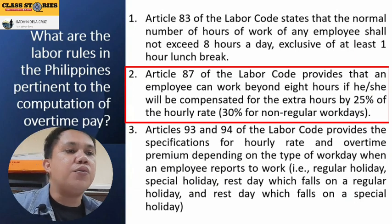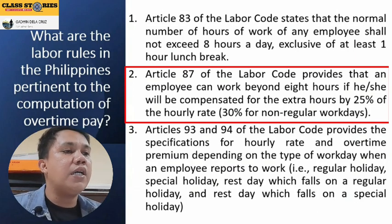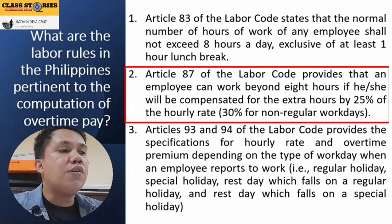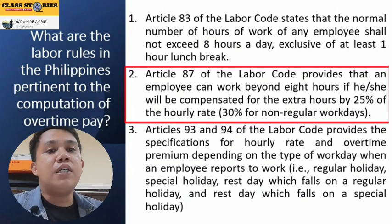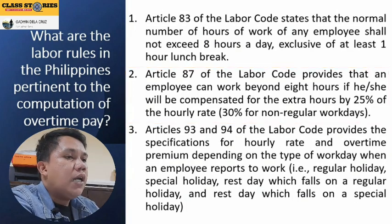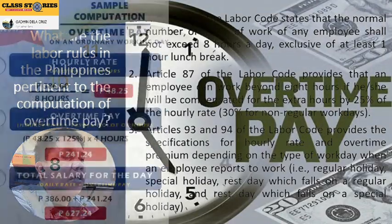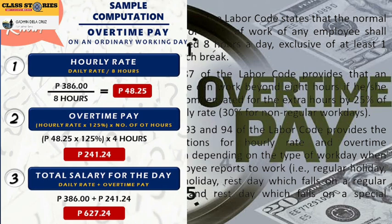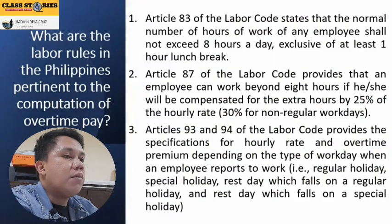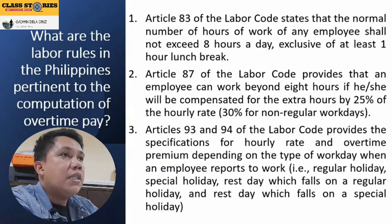Number two, Article 87 of the Labor Code provides that an employee can work beyond eight hours if compensated for the extra hours by 25% of the hourly rate, or 30% for non-regular working days. So employees can work beyond eight hours, but it needs to be compensated — that's where overtime pay comes in. For regular days, you receive 25% more than your regular hourly rate; for non-regular working days such as holidays, you receive 30% of your hourly rate as overtime pay.